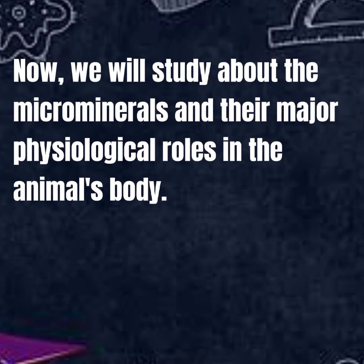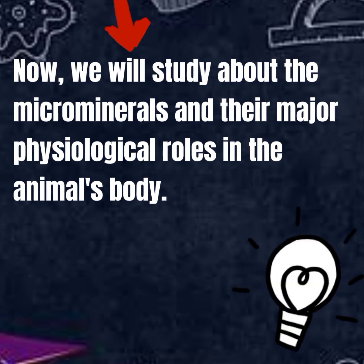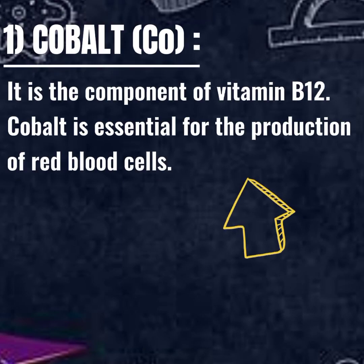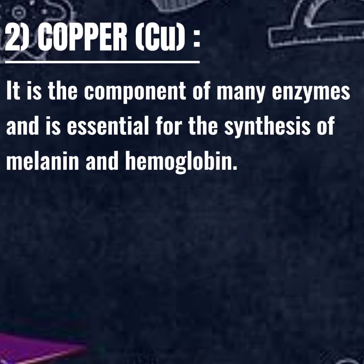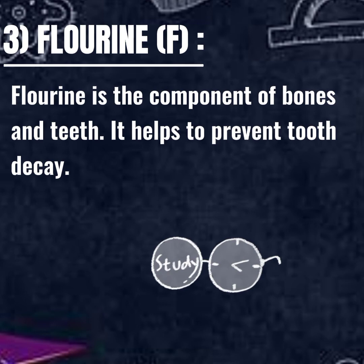Now we will study about the microminerals and their major physiological roles in the animal's body. Cobalt: it is the component of vitamin B12. Cobalt is essential for the production of red blood cells. Copper: it is the component of many enzymes and is essential for the synthesis of melanin and hemoglobin.